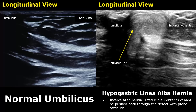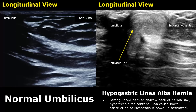An incarcerated hernia is irreducible, meaning that the herniated contents cannot be pushed back with probe pressure. A strangulated hernia has a narrow neck, and if fat is herniated it is usually hyperechoic. If bowel loops are involved, strangulation can cause bowel obstruction or ischemia.